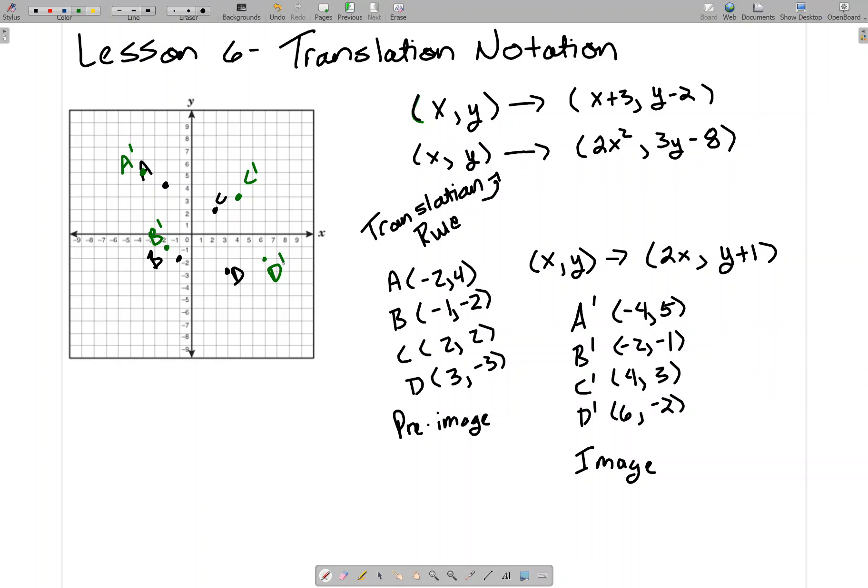Again, this is called a translation rule. Treat it like it's a formula. The original points are called the preimage and they don't have an apostrophe. The points after the translation rule get this little apostrophe, and that apostrophe in math is read as prime, like Optimus Prime. The original points are the preimage, and the new points are the image. And that's all there is to it. You're just moving points around.